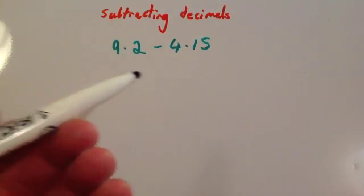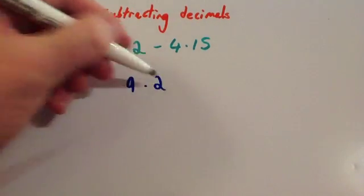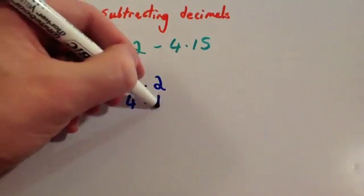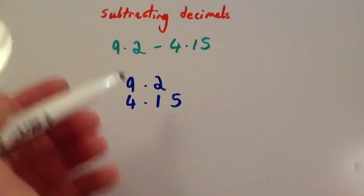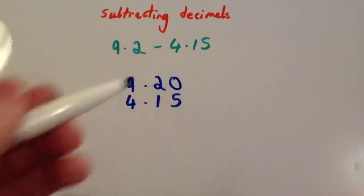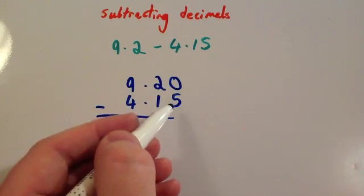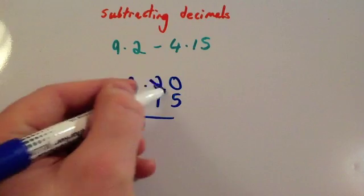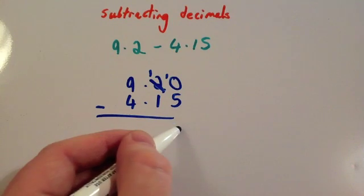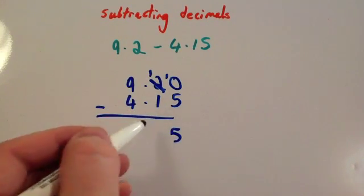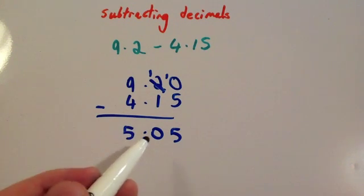This time we're going to do 9.2 subtract 4.15. Line them up. So 9.2, 4.15. As you notice, the top number is shorter length than the bottom one. So let's put a zero there to make sure they've got the same length. That'll help with the subtraction. Zero take away 5 you can't do. So you're going to need to borrow one from the 2, make it a 1 and put a 1 there. So we've got 10 subtract 5 is 5. 1 subtract 1 is 0. And 9 subtract 4 is 5. So our answer would be 5.05.